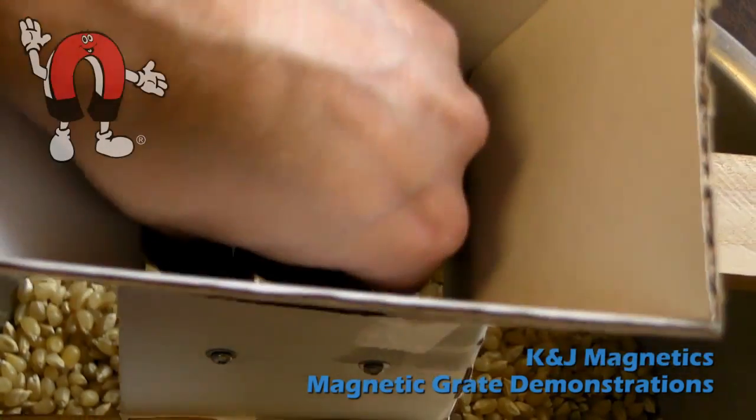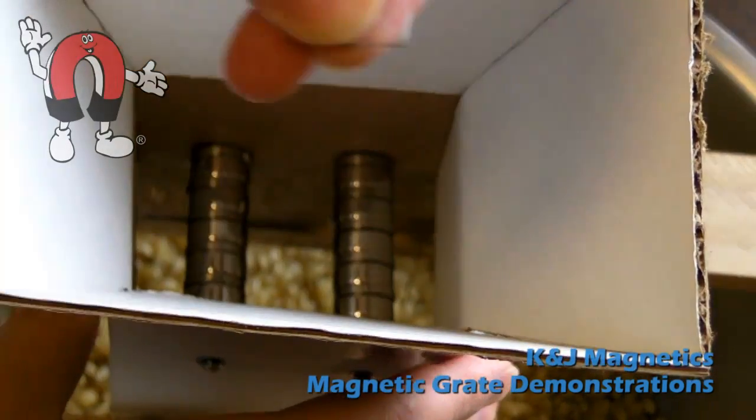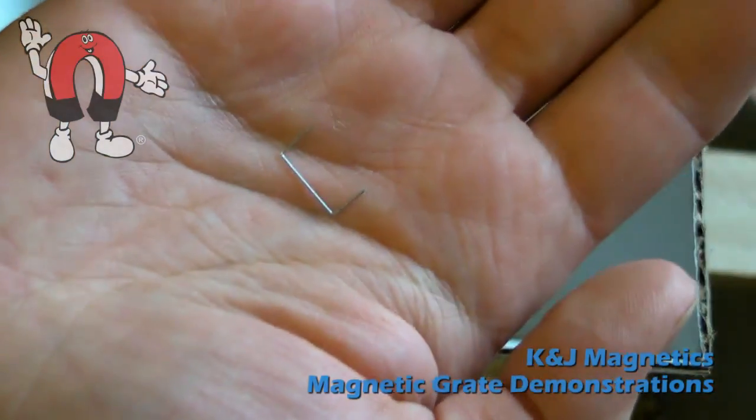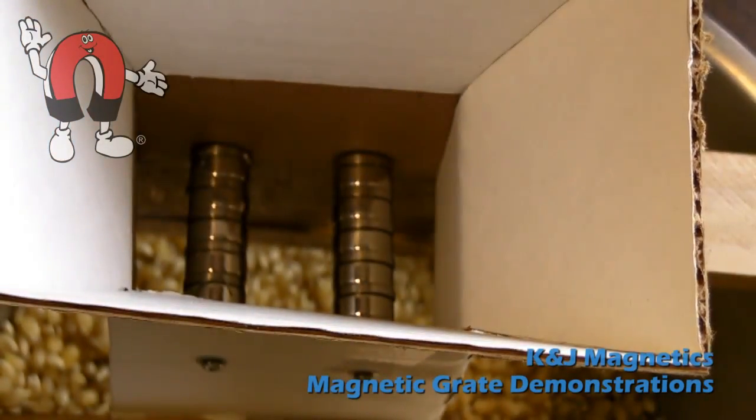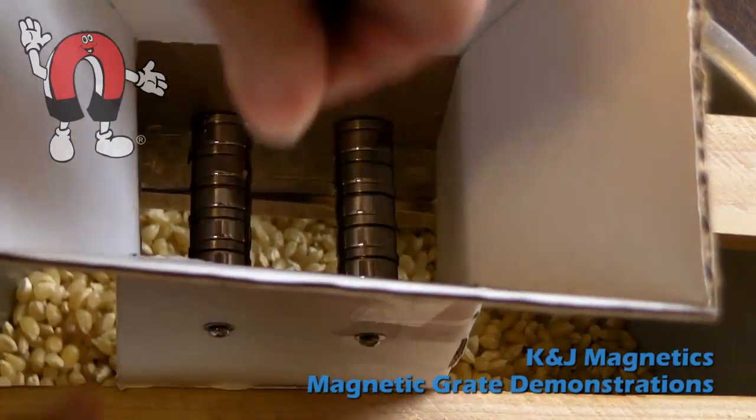This little magnetic grate assembly we made, we used RA24, 5/8 inch diameter ring magnets, along with some steel washers of about the same outside diameter.